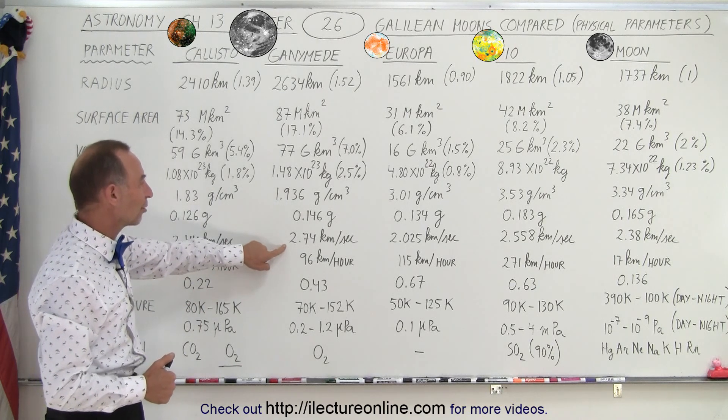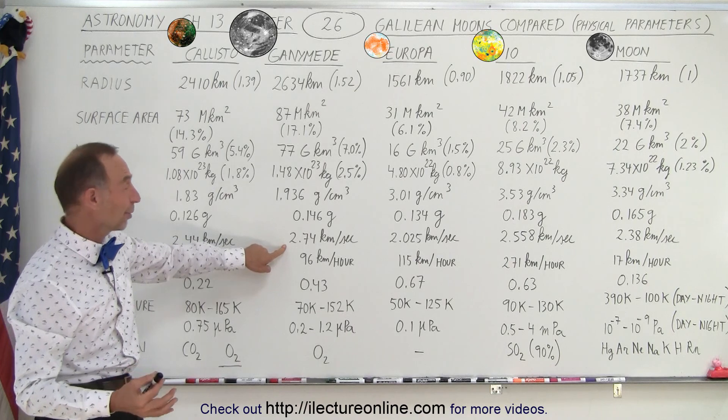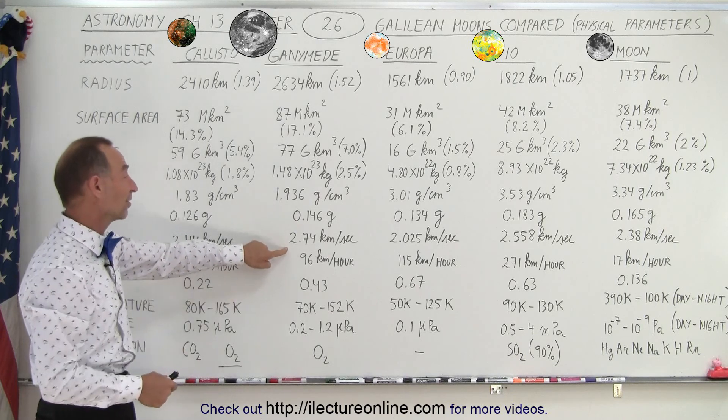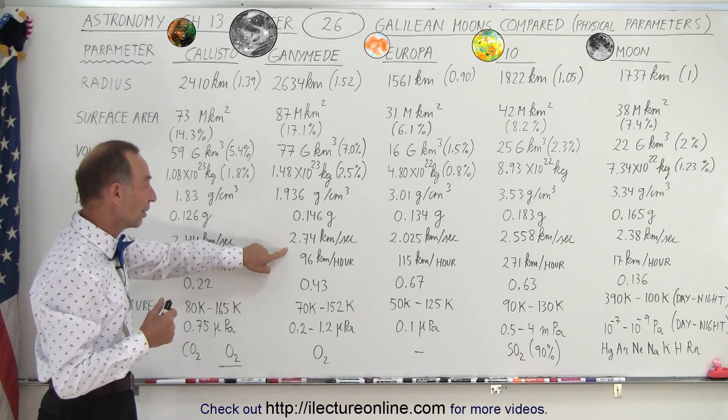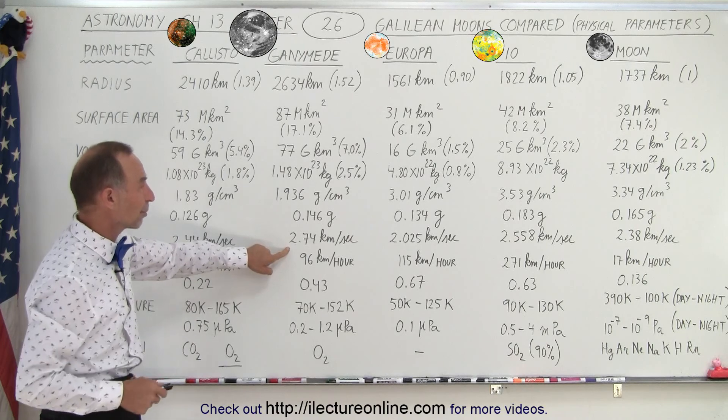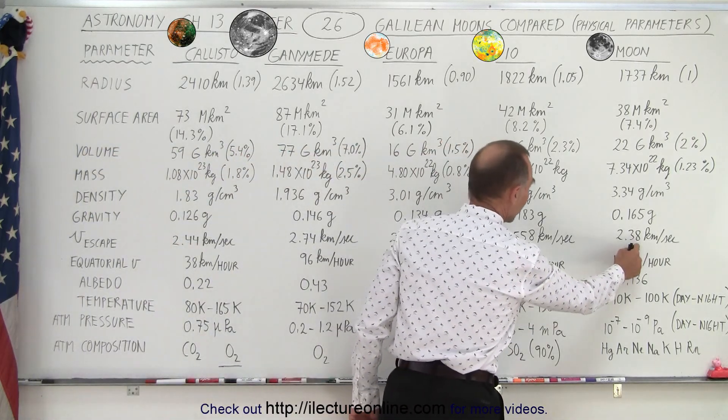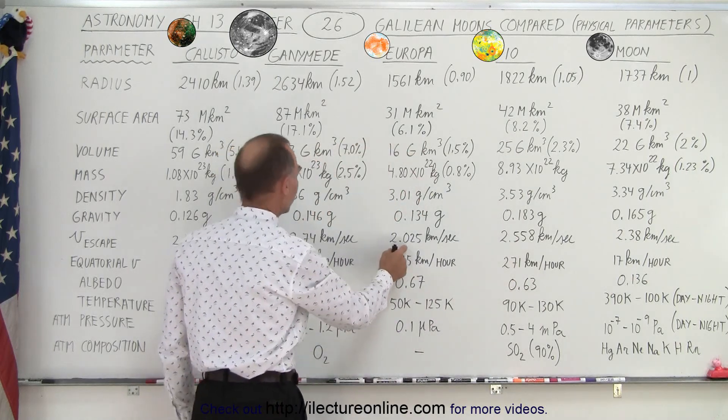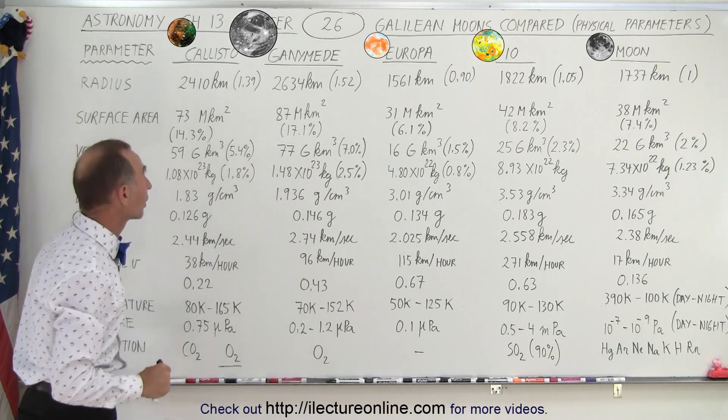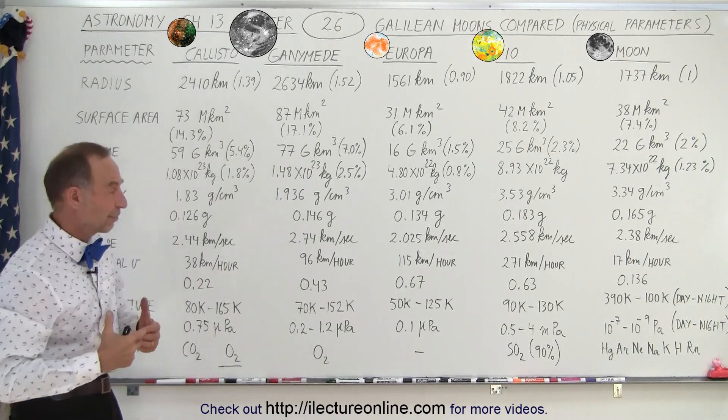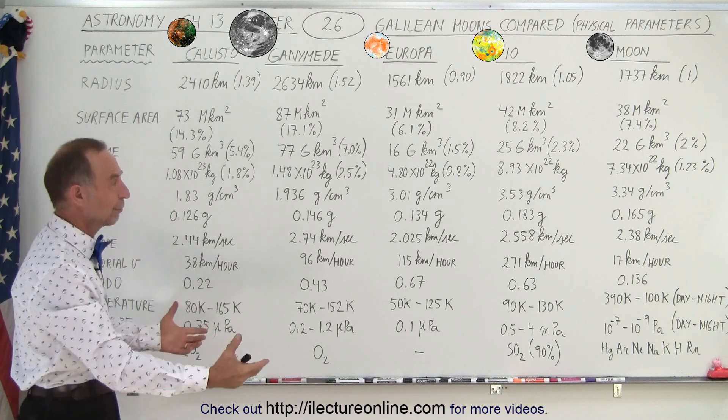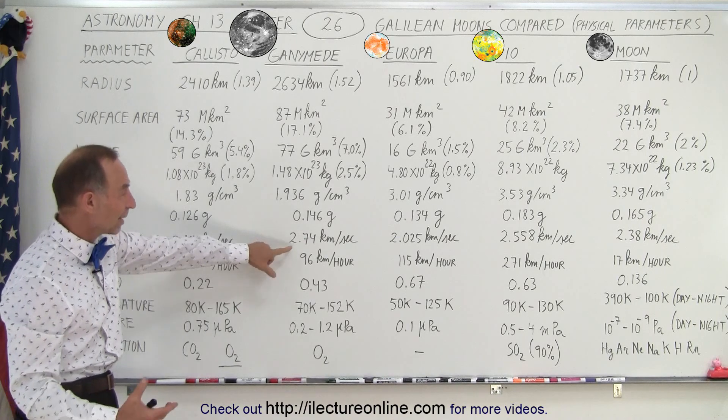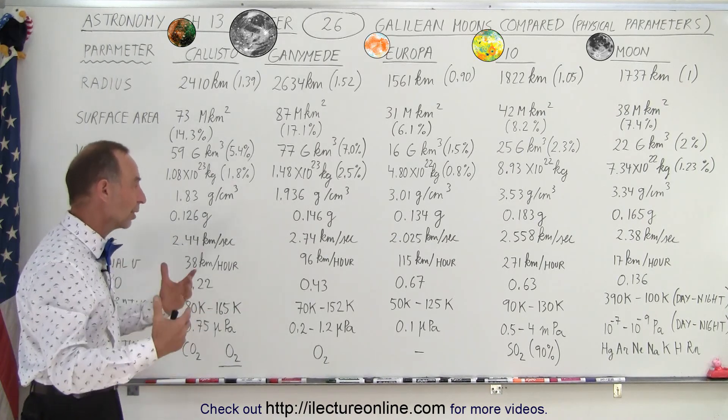However, since it's bigger, it has a larger escape velocity. So even though it's easier to get away from the surface, it is not as easy to get away from the moon itself because the escape speed to get away from Ganymede needs to be 2.74 kilometers per second. When we compare that to the moon, it's 2.38. For Io, it's 2.56. It's a little bit over 2 for Europa and it's 2.44 for Callisto. So if you were to land a spacecraft on one of those moons or on all four moons, to get away from those moons, you need to go the fastest to try to get away from Ganymede simply because it's a larger moon with a larger mass.